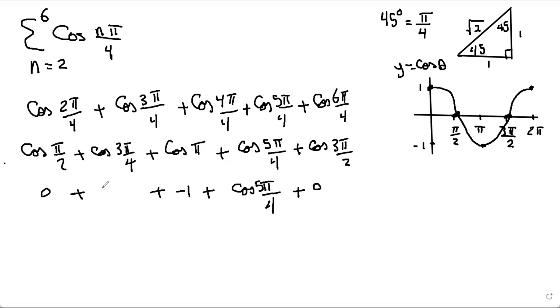Cos 3π over 2 is right here on the graph, so that's 0 as well. So the zeros cancel, and we have negative 1 there.